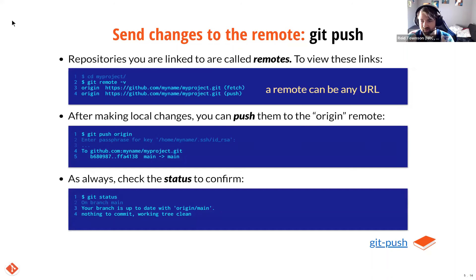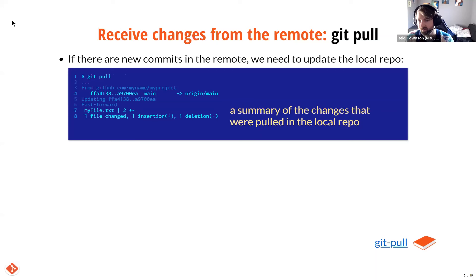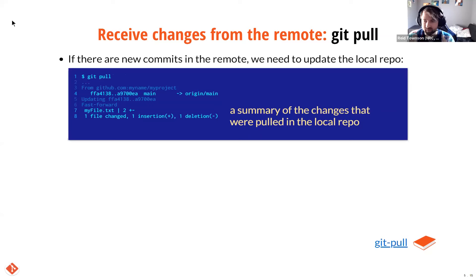If you have a cloned repository from GitHub, it automatically contains in its metadata a link to a remote repository already configured. You can view this using the git remote command, which prints out the remotes with a name and link. A repository can have multiple different remotes, but by default there's just one — the original remote — and it's called origin. When you make changes and want to update the original remote repository, you use the git push origin command. You should save your work, do a commit first, make sure you're in a clean state locally, and then type git push origin.